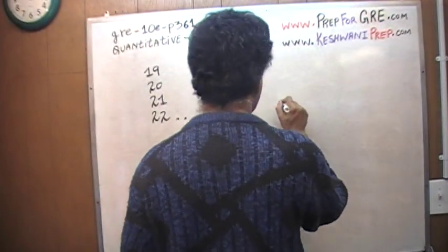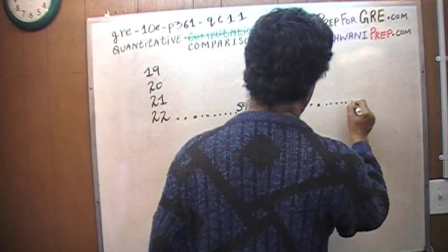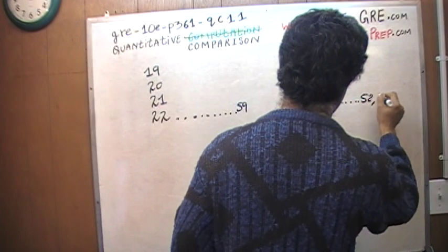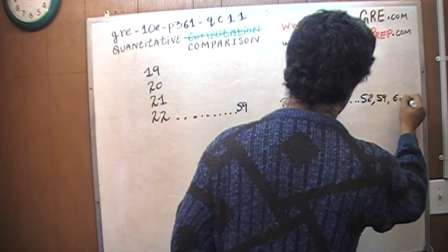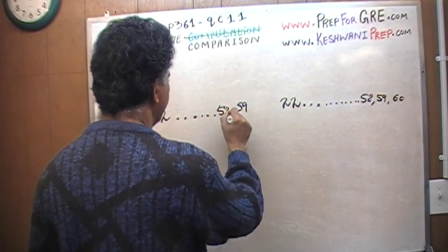So we start with 22, 23, 24, 25, 26, all the way to 58, 59 and finally the 60. We must include the 60. Here also we have 58 and then we have 59.